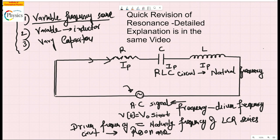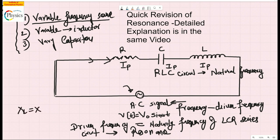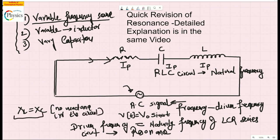The third way is to vary the capacitor. Any one of these three conditions can achieve resonance. The mathematical explanation is simple: during resonance, XL equals XC, which means there is no reactance in the circuit at all. The capacitor and inductor, which have reactances XL and XC, do not play any part — only the resistor is acting.